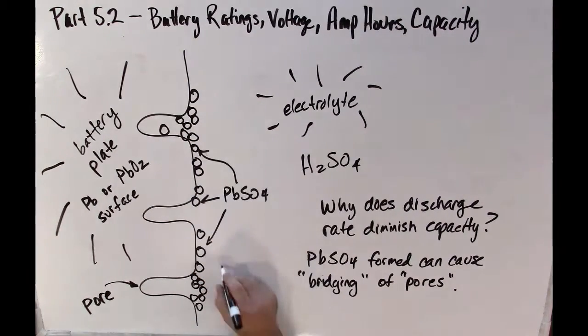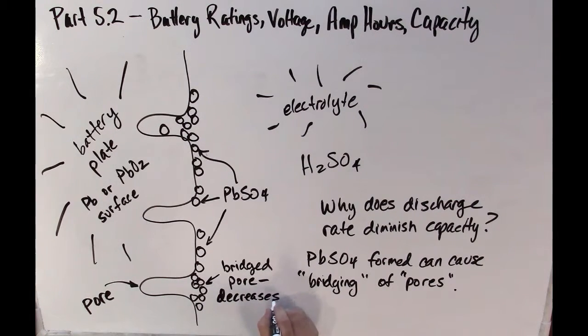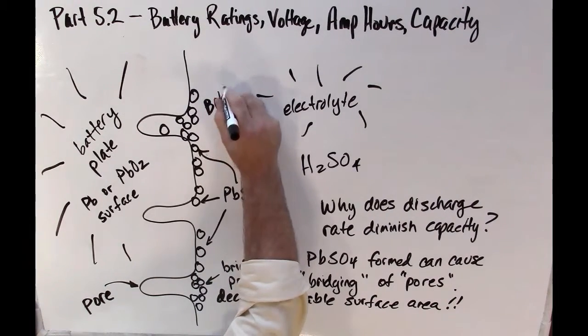If we diminish the usable surface area of the plate by covering these pores, then we decrease the overall amount of material that's available for the chemical reaction. It does no permanent damage to the battery, it just means that on this particular discharge, you don't get as much energy if you did it very quickly.